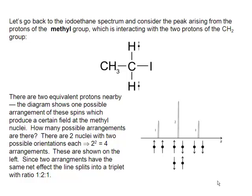Of course there's only one way I can draw them both up, and there's only one way I can draw them both down. But there are two ways in which I can draw them up and down - the left one up and the right one down, or vice versa. It's because of those three possible orientations that the line associated with the methyl group is split into a triplet.